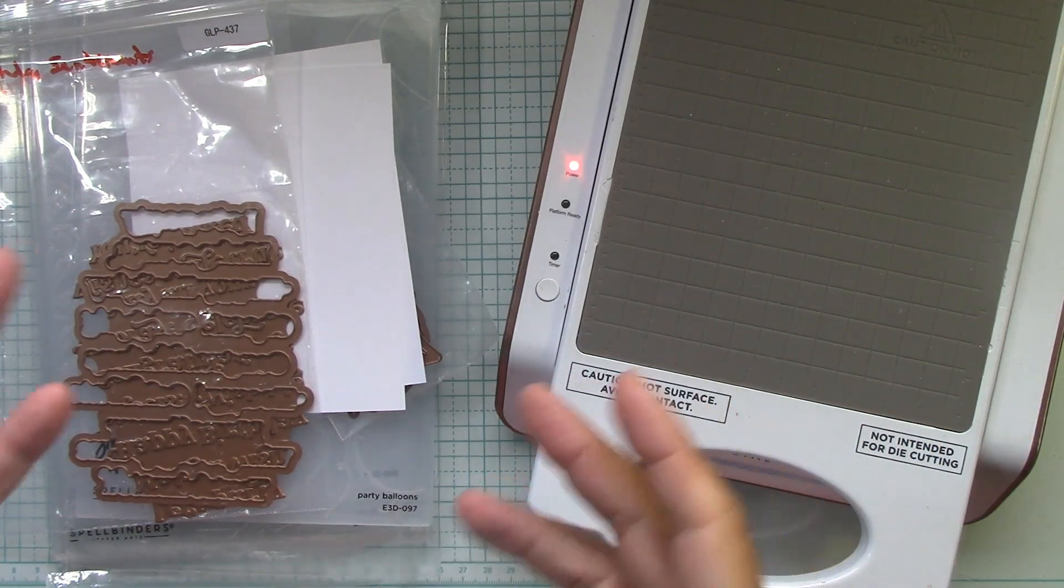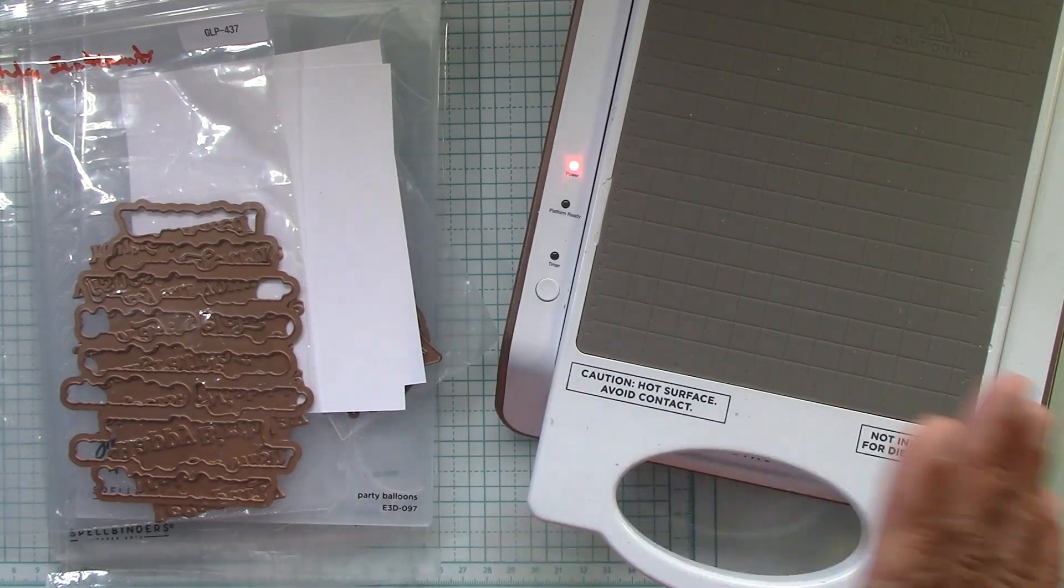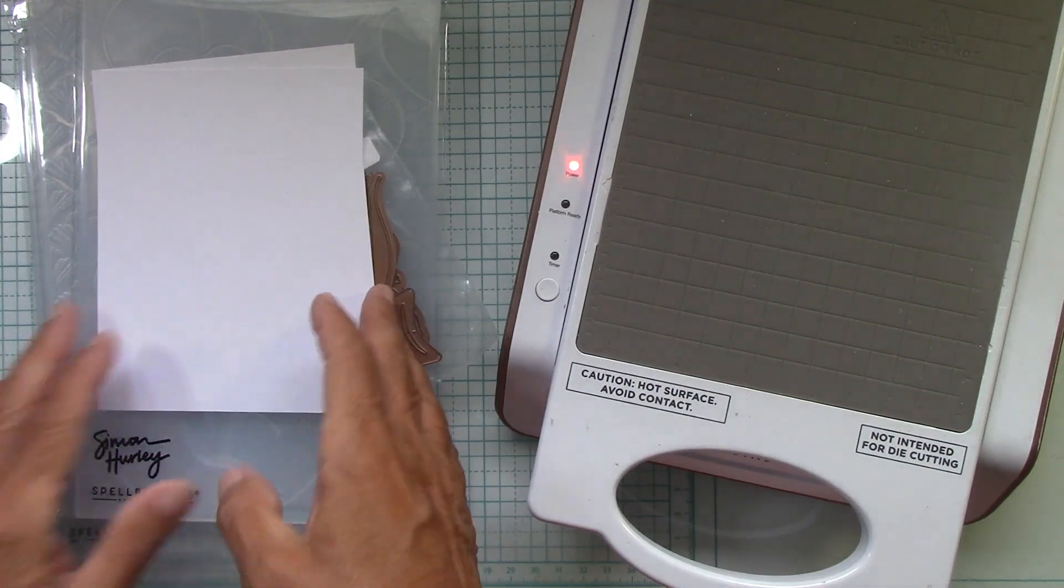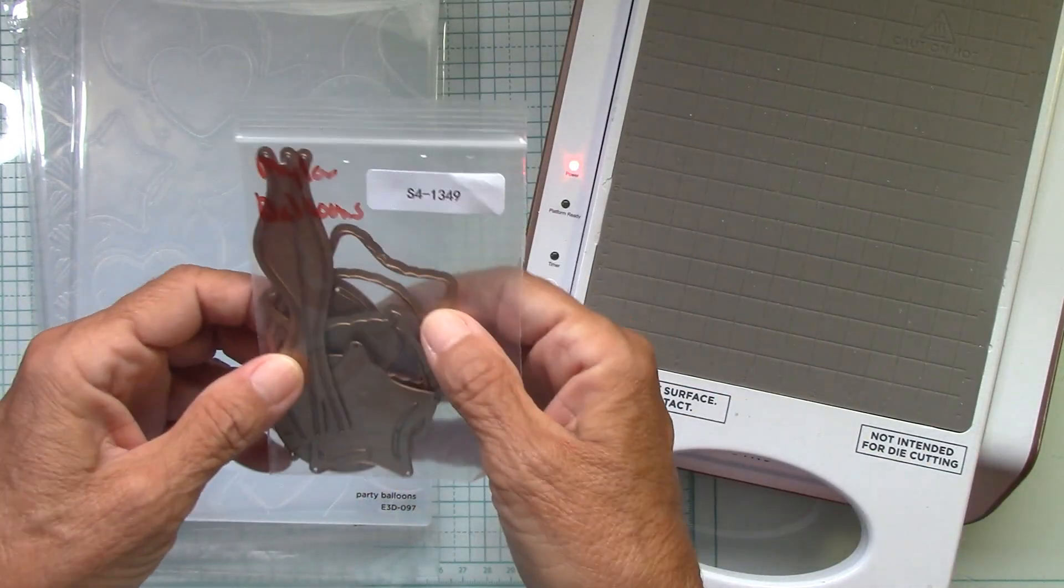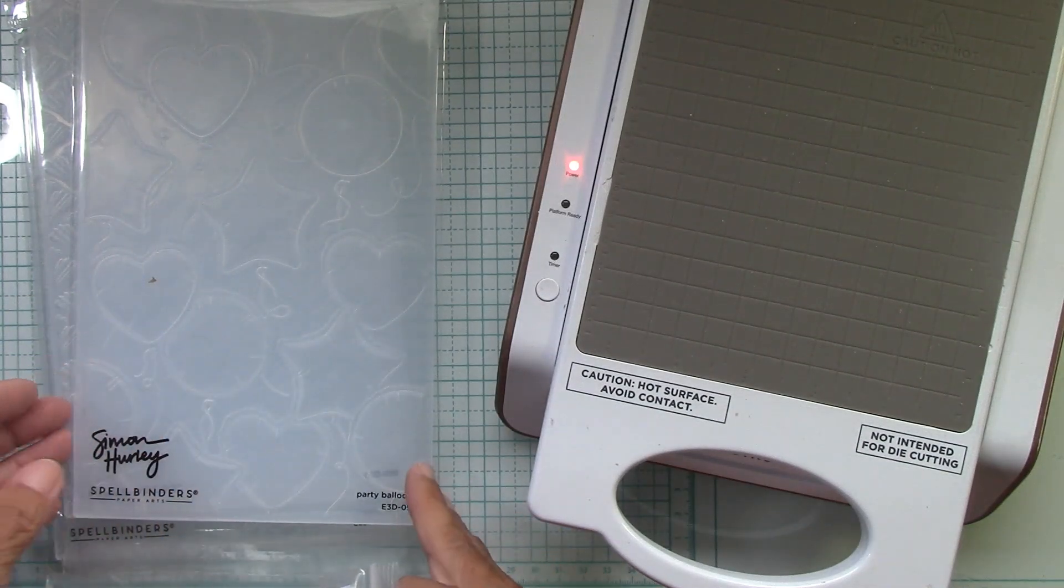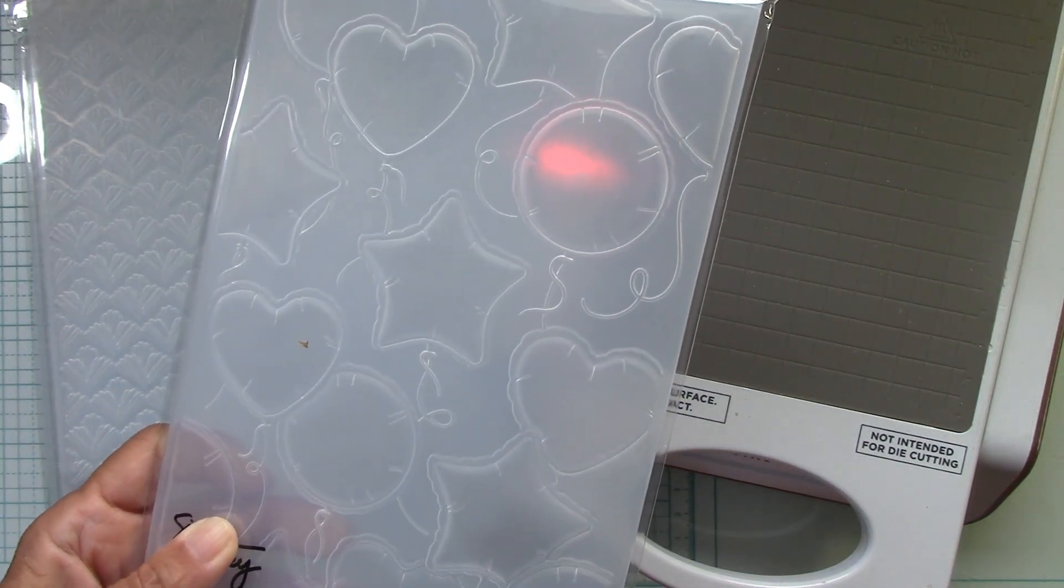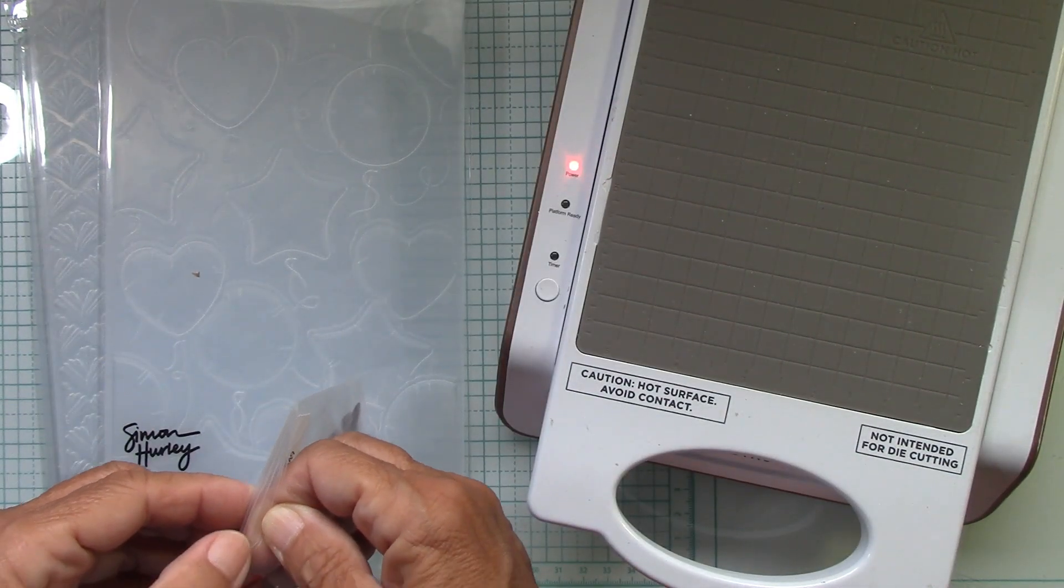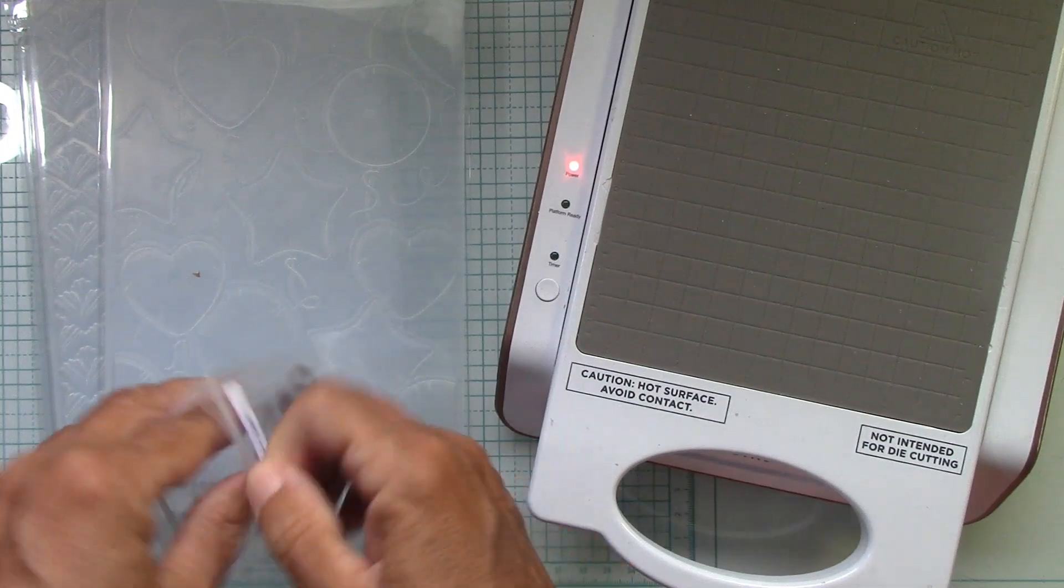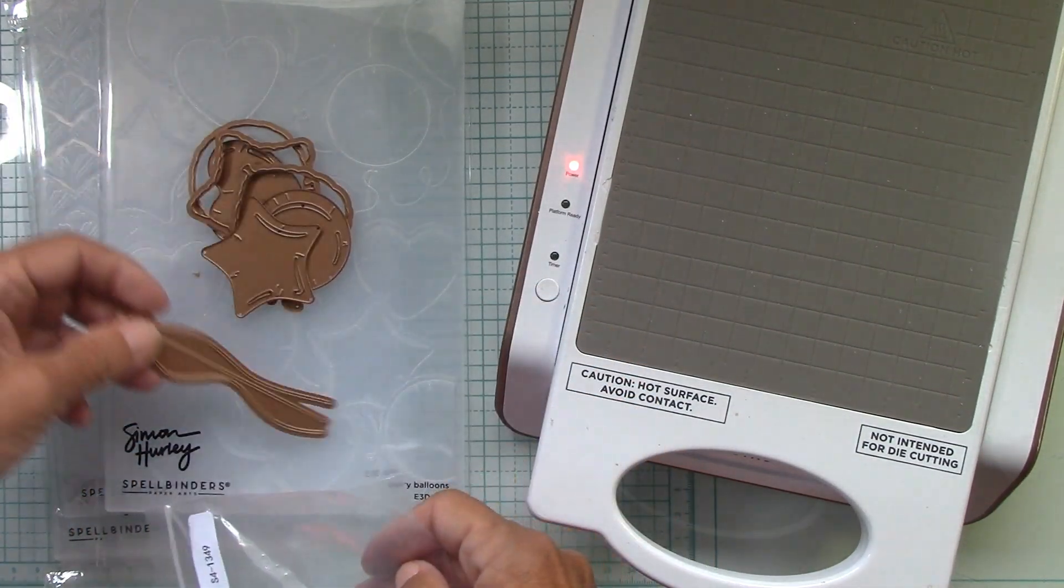I wanted to start this series with just hot foiling. So they sent over the birthday sentiments. I have some Hammermill cardstock here. These are mylar balloons. And look at this wonderful party balloon embossing folder. I believe these mylar balloons will kind of go with this.